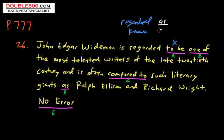I've also seen this exact type of problem in the improving the sentence section, where the sentence said 'he was regarded or considered to be' — that is always wrong. The correct form is 'known or regarded as.' So the answer here is A. See you next time, thanks for watching.